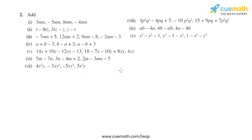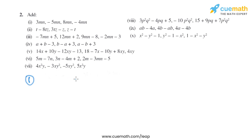Question 2 of this exercise says to add the like terms or expressions given in the question. Let's start with the first part. The terms are 3mn, minus 5mn, 8mn, and minus 4mn.